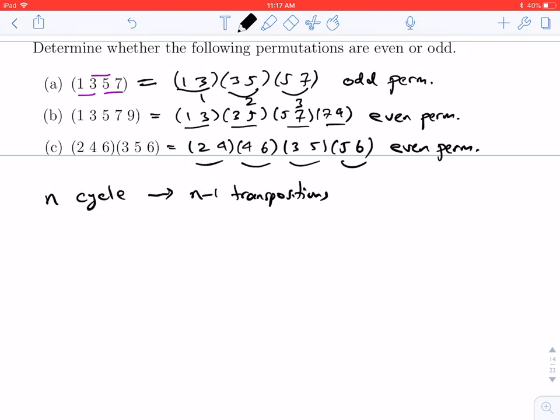Of course, if n minus 1 is even, then your n-cycle will be an even permutation. So the n-cycle is even if your n minus 1 is odd, and of course your n-cycle will be an odd permutation.